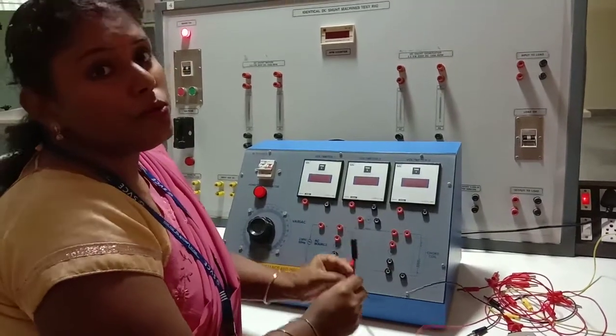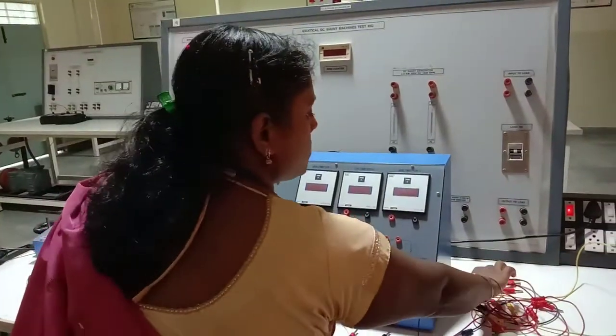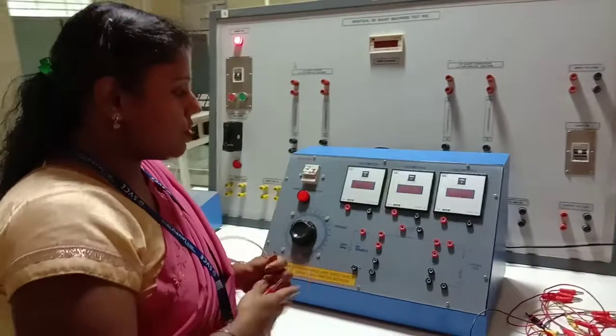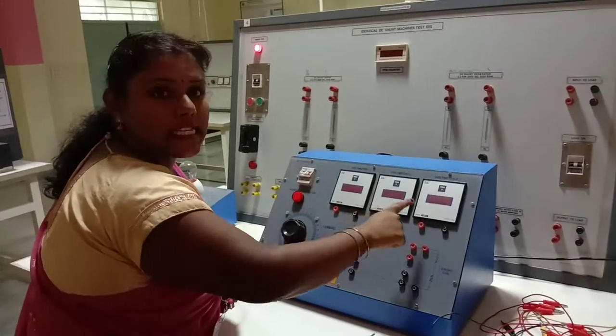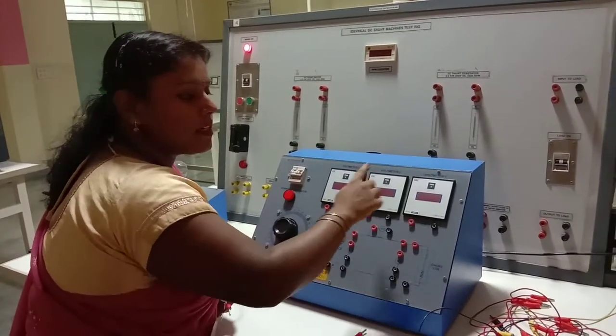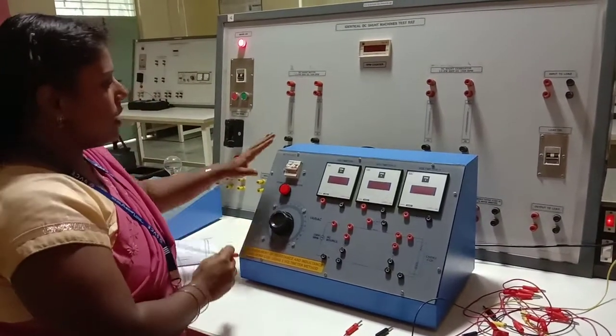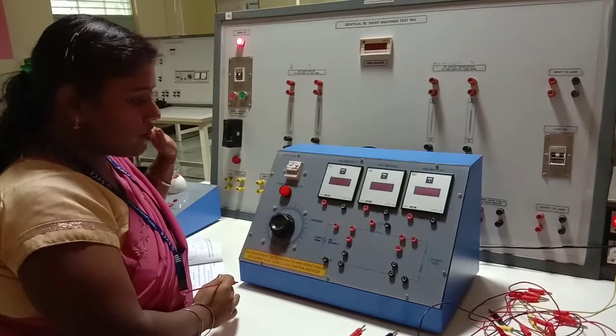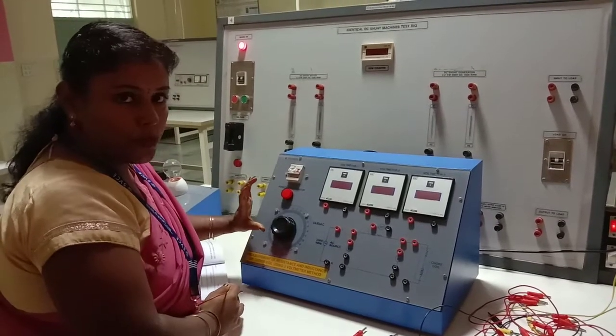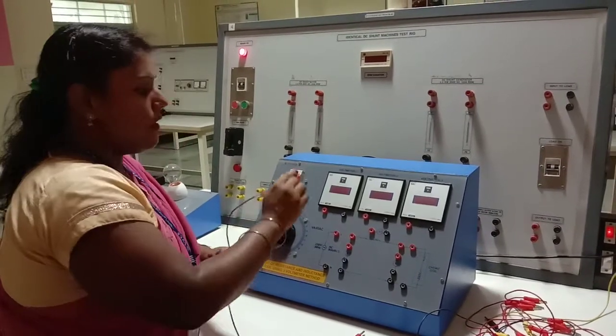So now I am going to show you how to do the connection. First, always whenever you do a connection, it should be from series, start from live wire, then connect it to load, then come back to the neutral portion. MCB is all internally connected, I am not going to do any connection here. So check variac is in zero position or not. Zero position is there, then we will start.